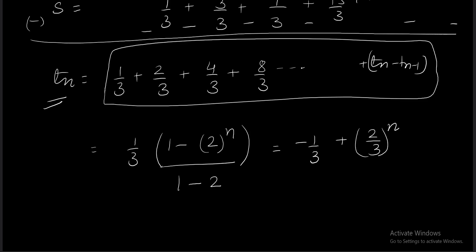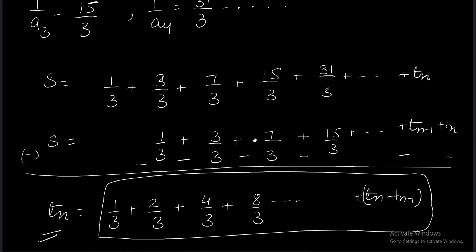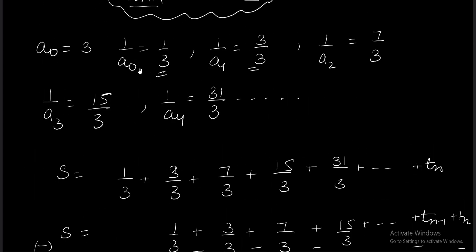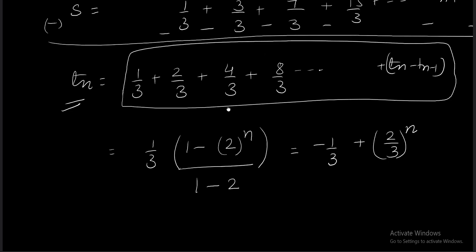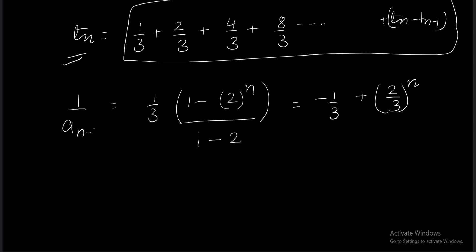This gives us 1/a_{n-1} because t_2 is 1/a1, t_3 is 1/a2, so t_n is 1/a_{n-1}. But I need 1/a_n, so replacing n with n+1, we get 1/a_n = -1/3 + 2^{n+1}/3.